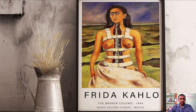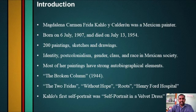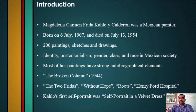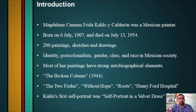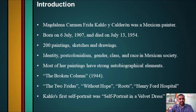Her pain over her divorce from Rivera can be seen in pieces such as The Two Fridas and the painting we will discuss today, Self-Portrait with Thorn Necklace and Hummingbird. Pieces such as The Broken Column and Without Hope suggest Kahlo's anguish towards her ongoing physical deterioration. Even her infertility is explored in works such as Roots. Henry Ford Hospital gave a direct reference to the miscarriage she had at that hospital. So most of her paintings have strong autobiographical elements.